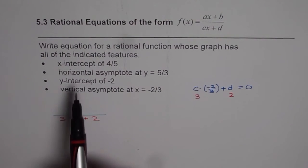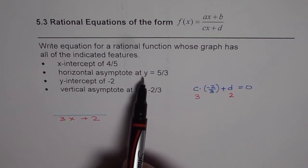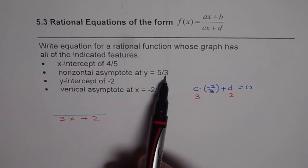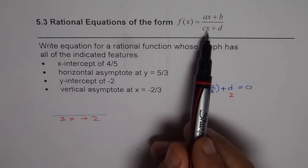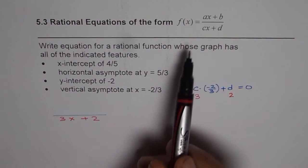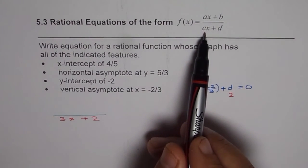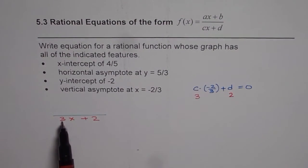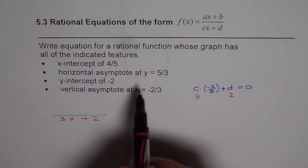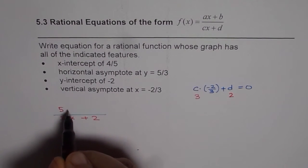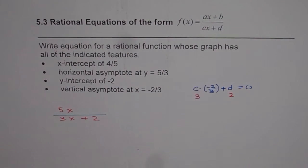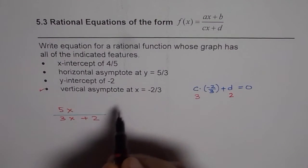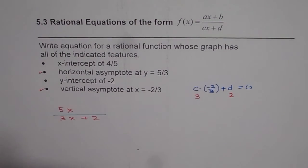Now let us look into the horizontal asymptote, which is y = 5/3. If I am going to write an equation like this, then 5/3 is the ratio of the coefficients of the numerator and denominator — so a over c should be 5/3. I already have c = 3 here, so I can write a = 5, giving me 5x in the numerator. So from the vertical asymptote we got the denominator, and from the horizontal asymptote we got this factor.